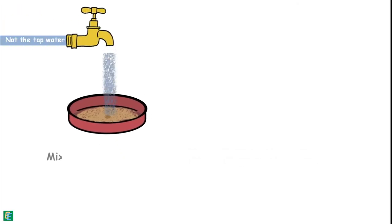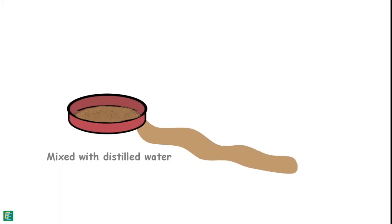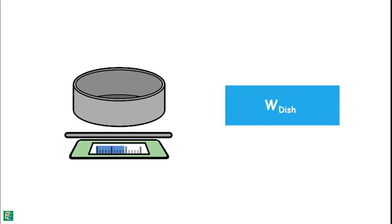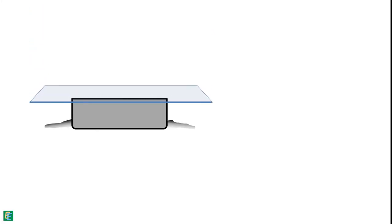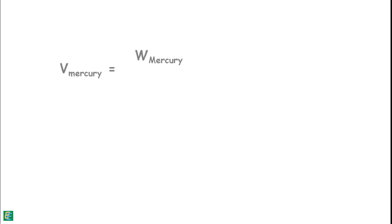The soil is mixed with a sufficient quantity of water to bring it to a consistency that it may flow. A circular shrinkage dish made of steel is taken, and its empty weight is noted as W dish. To determine its volume, it is filled with mercury. Excess mercury is removed by pressing a glass plate over the top of the dish, and the weight of this mercury is noted as W mercury. From this weight, its volume is determined as weight of mercury divided by specific gravity of mercury.